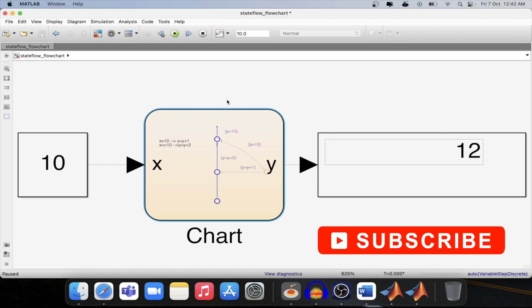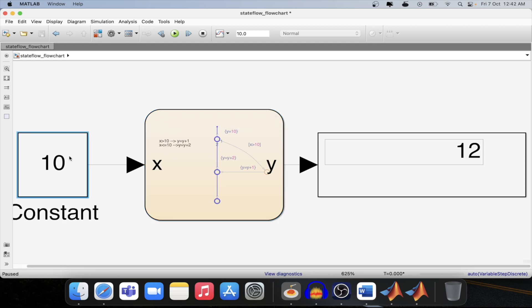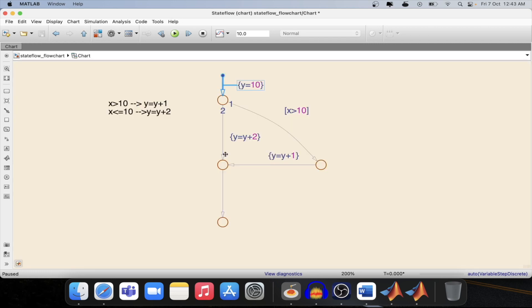Now let's step into the model and see how it is working. As I have given the input as 10, then the output should be added. Then y should be added with a value of 2 in the state flowchart, in the flowchart.